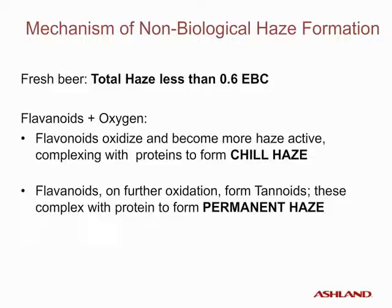Fresh beer should have a total haze of less than 0.6 EBC units. Flavonoids oxidize and become more haze-active, complexing with proteins to form chill haze. On further oxidation, flavonoids form tannoids, which complex with proteins to form permanent haze. The more polymerized the tannoids are, the more reactive they become and readily complex with haze-forming proteins.